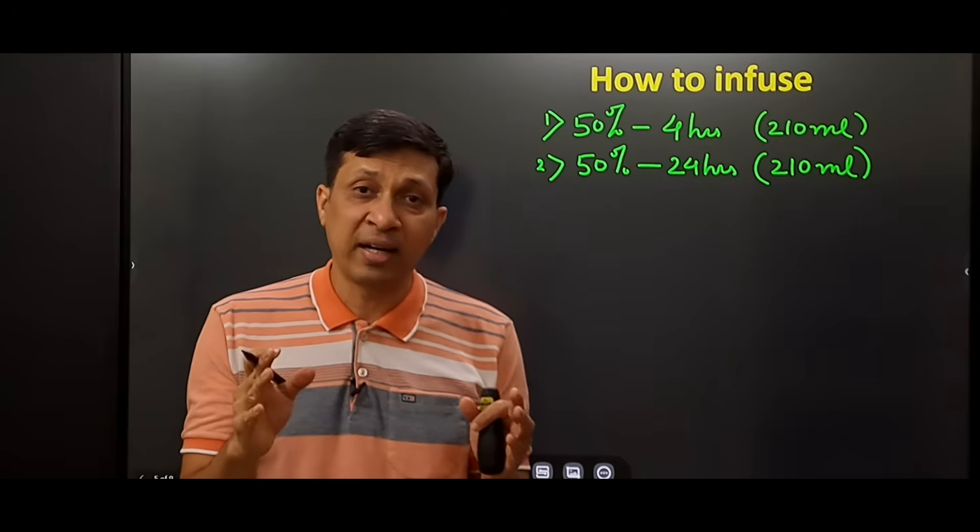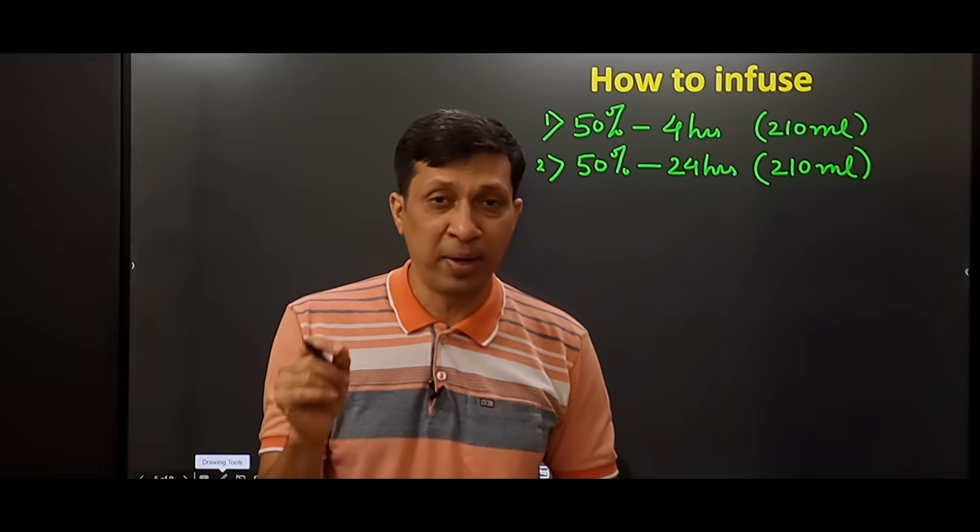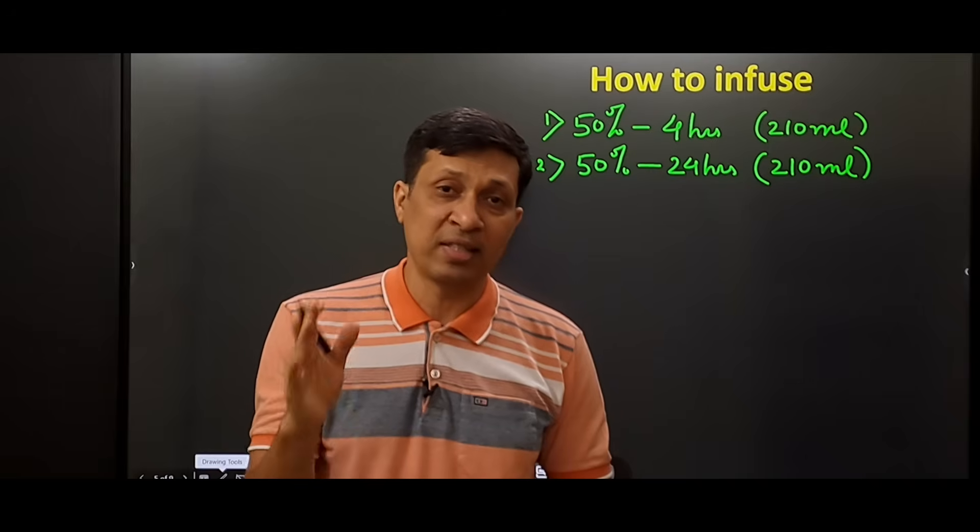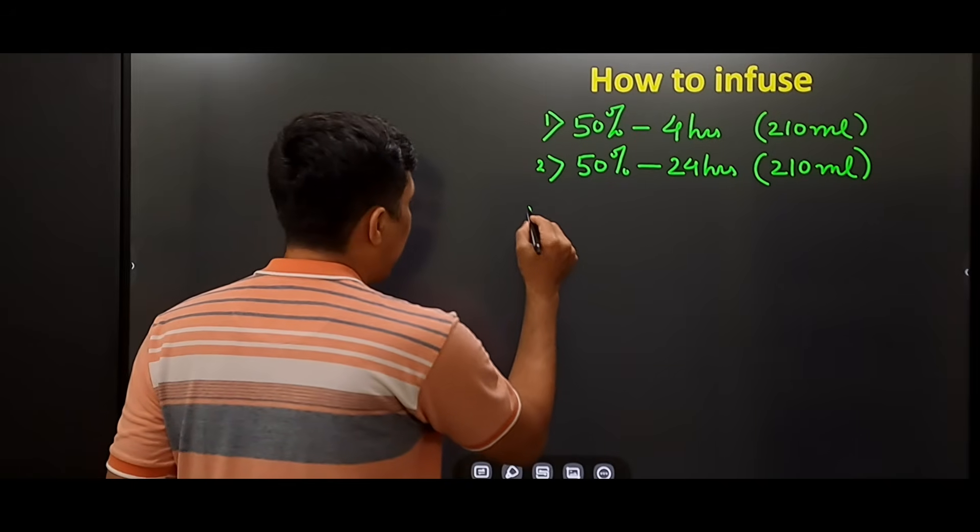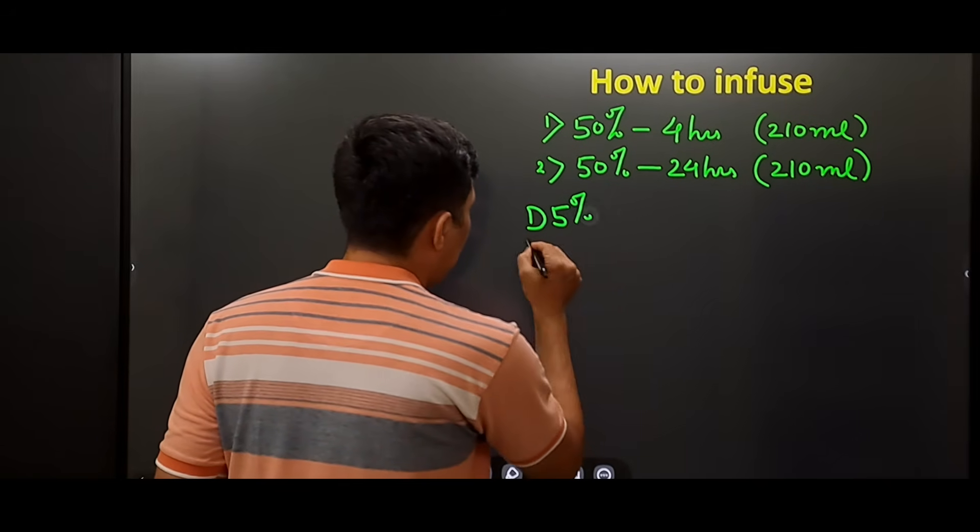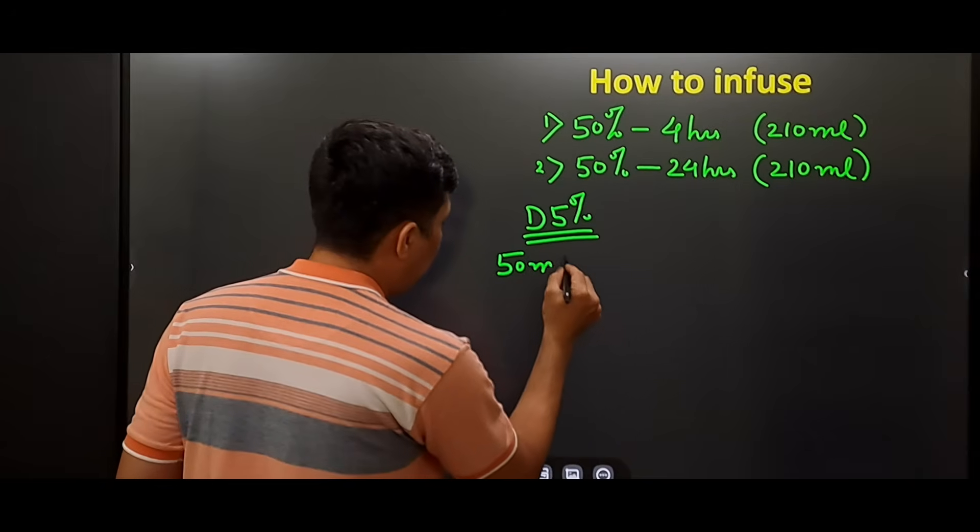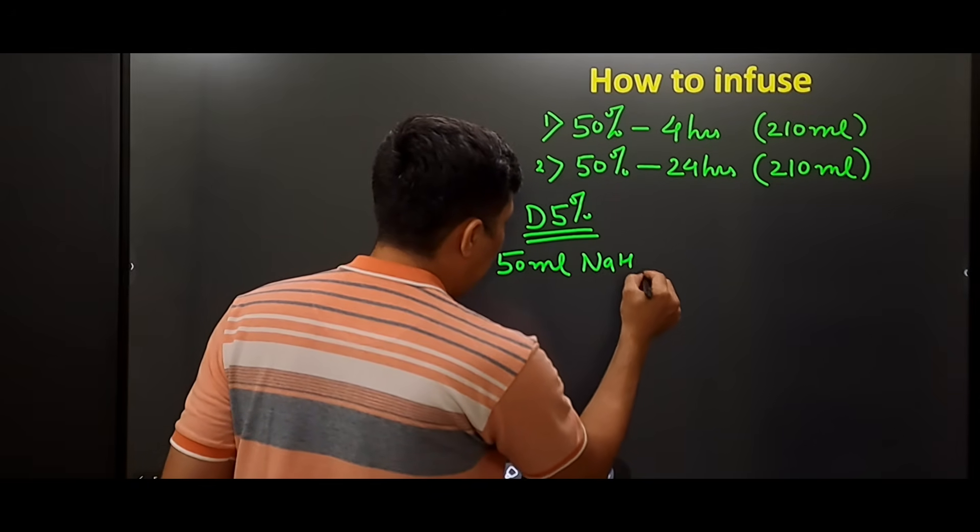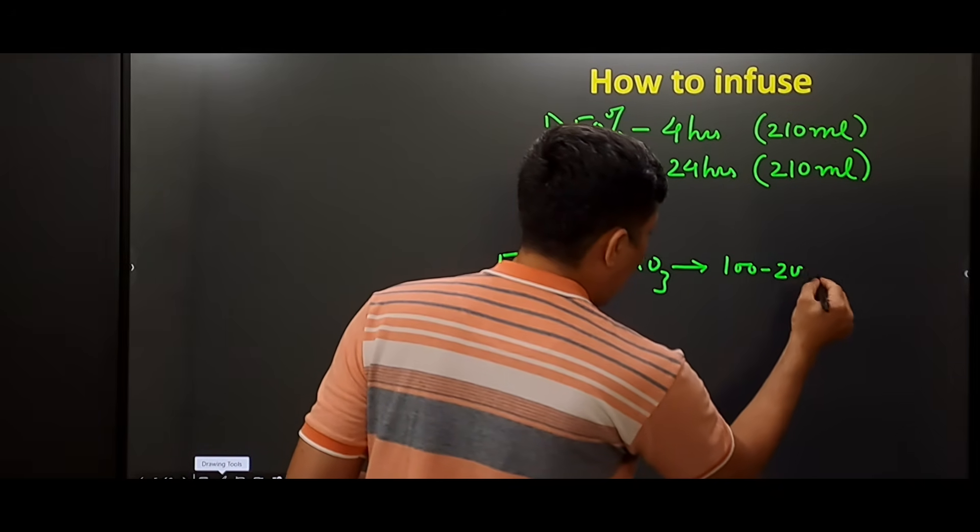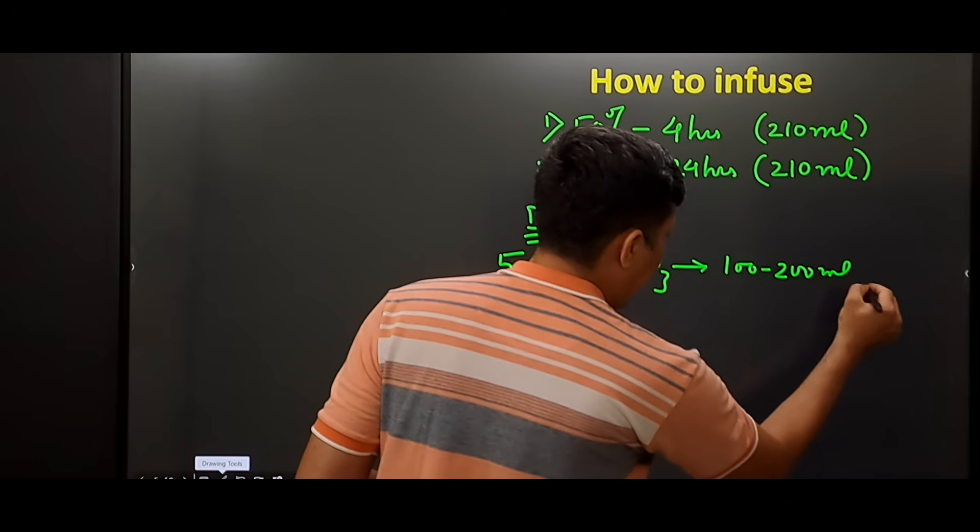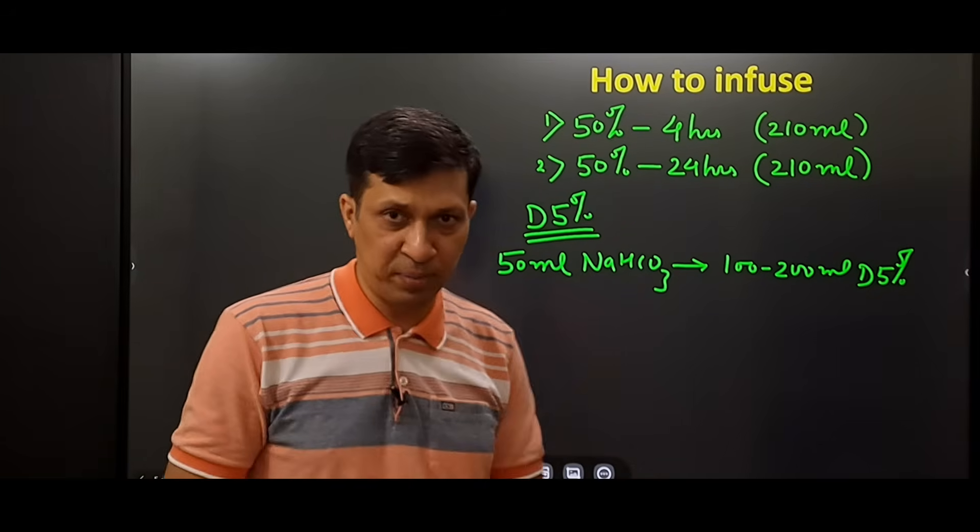This drug is very concentrated, and if given by peripheral veins, it can cause thrombophlebitis. So we have to dilute this drug. We dilute this drug in dextrose 5%. Generally, 50 ml of sodium bicarbonate is diluted in around 100 to 200 ml of dextrose 5%. This we decide depending on the fluid status of the patient.